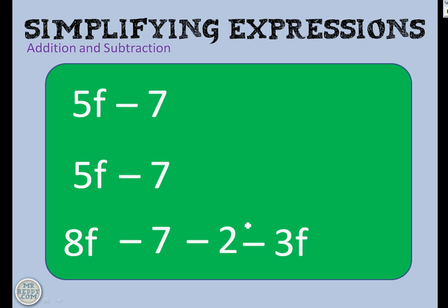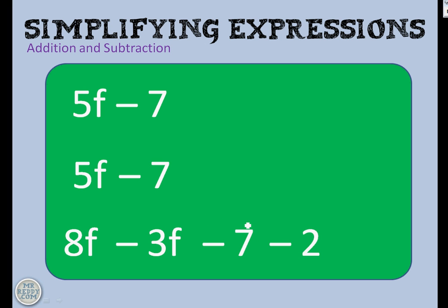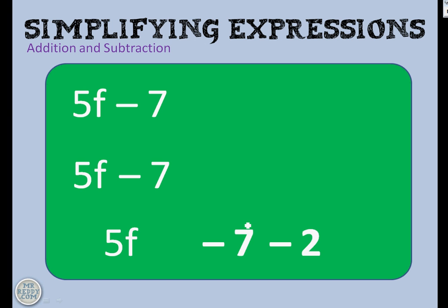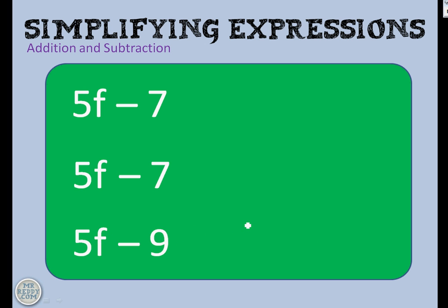One more of those rejigging examples where we keep the constants and the variables together but separate: 8f take away 3f is 5f. Take away 7, take away 2 — do you remember back to before? We're taking away 7 and then taking away 2. Is that the same as take away 5? Is that add 9? It's take away 9. Of course. So that boils down to 5f take away 9, and that's as far as you can go with simplifying that one.